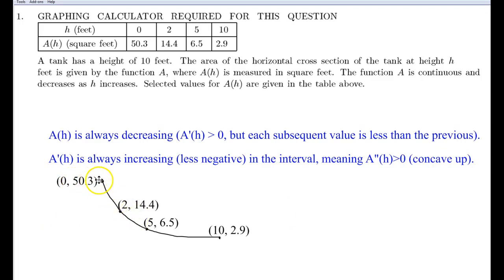It's concave up. So here's just a quick sketch. So, you know, 0 is 50.3, 2 is 14.4, 5, 6.5, 10, 2.9. So you see, concave up. So the function is always decreasing, and the second derivative is always positive, over the interval from 0 to 10.